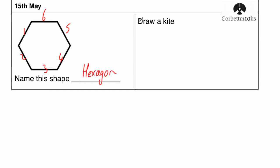The next question says draw a kite. So drawing a kite would look something like this, where you'd have a line at the top, another line the same length, and then a line like so, and a line like so. So that's a kite.